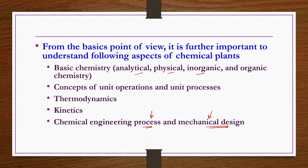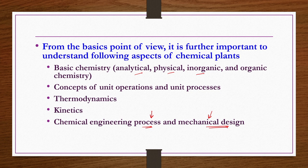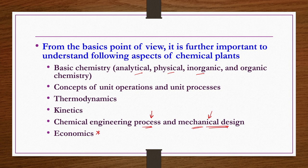Chemical process design and mechanical design are different. Chemical process design — for example, how many distillation columns, what should be the column height, at which stage the feed enters — is different from mechanical design, which covers construction material, wall thickness, and materials for trays. Most importantly, economics is also a required area of knowledge.